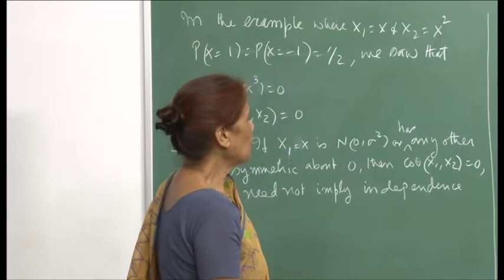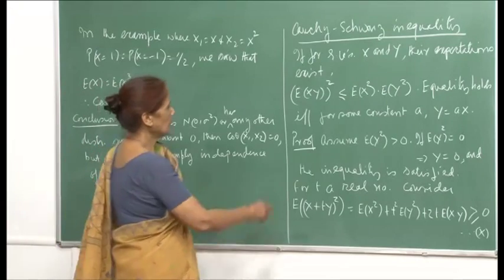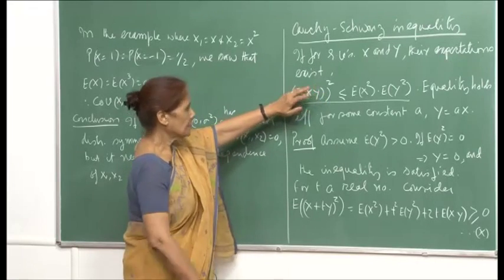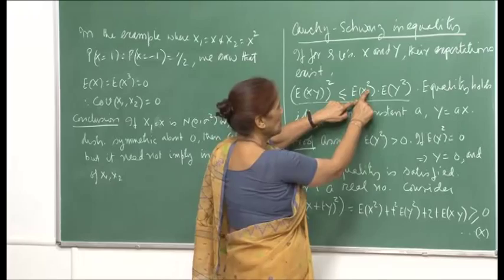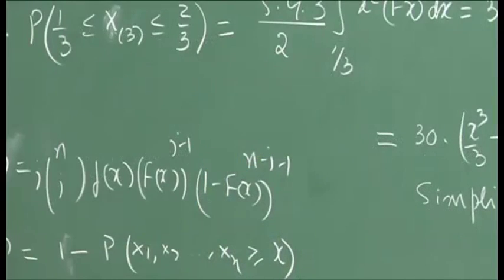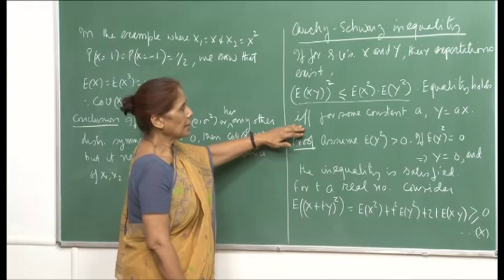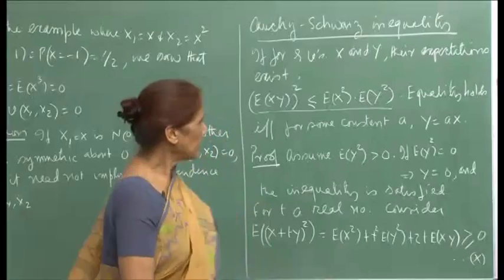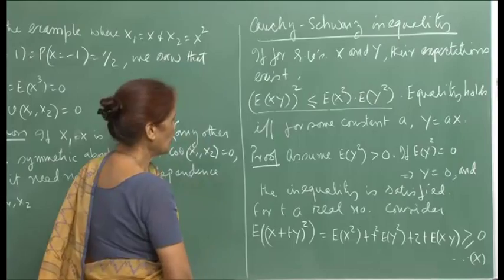Now, a very interesting and powerful inequality: if their expectations exist, then [E(XY)]² ≤ E(X²)·E(Y²) — this is the Cauchy-Schwarz inequality. Equality holds if and only if for some constant a, Y = a·X, meaning there is a linear relationship between X and Y. If X and Y are linearly related, the Cauchy-Schwarz inequality is satisfied as equality; otherwise it will be strict.